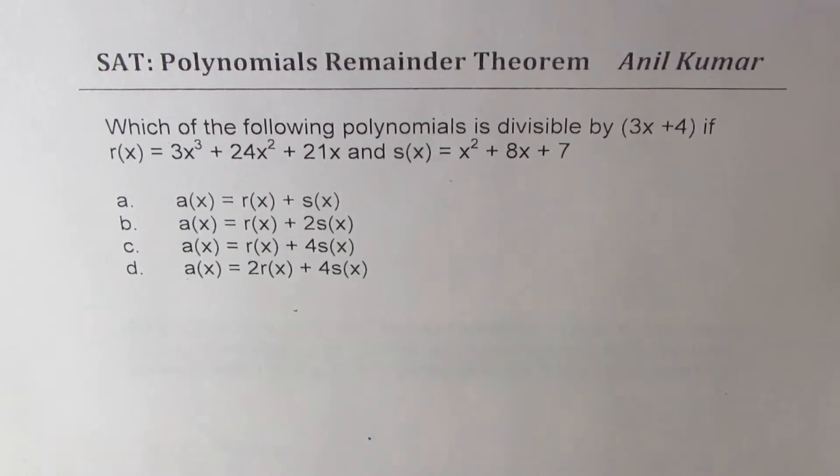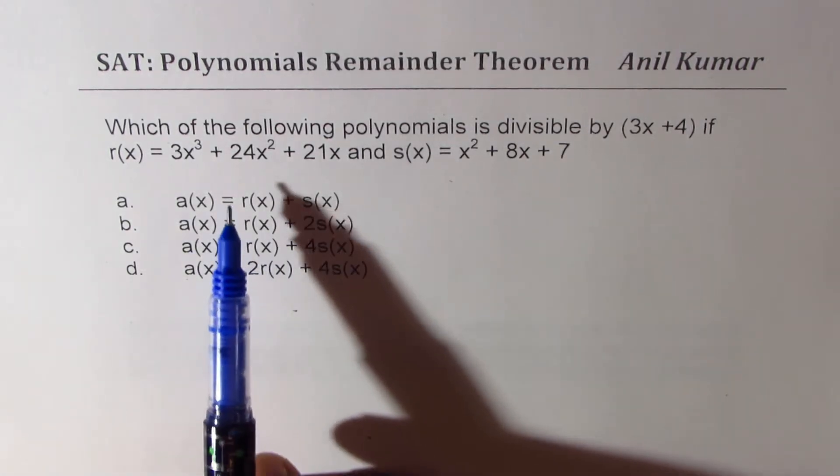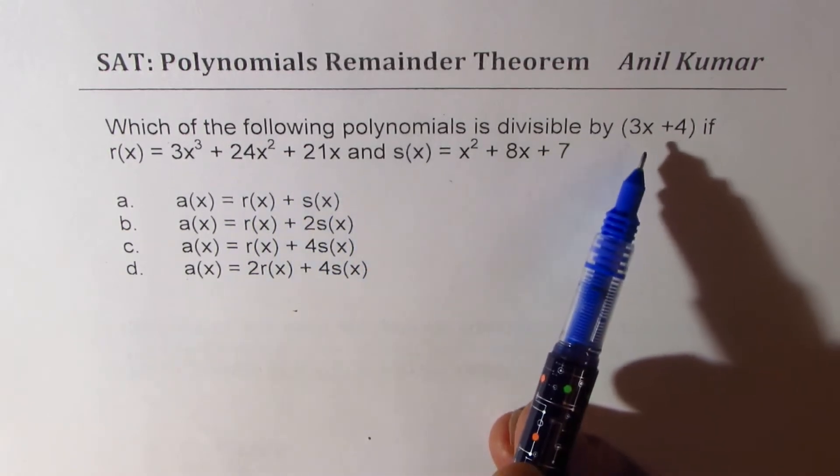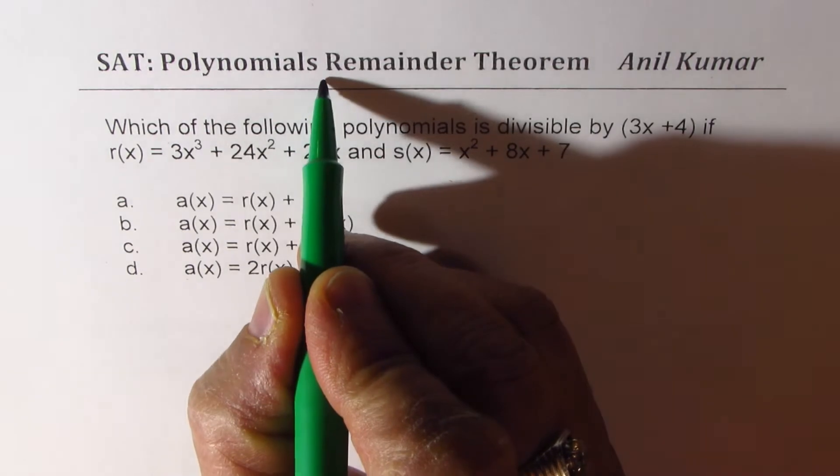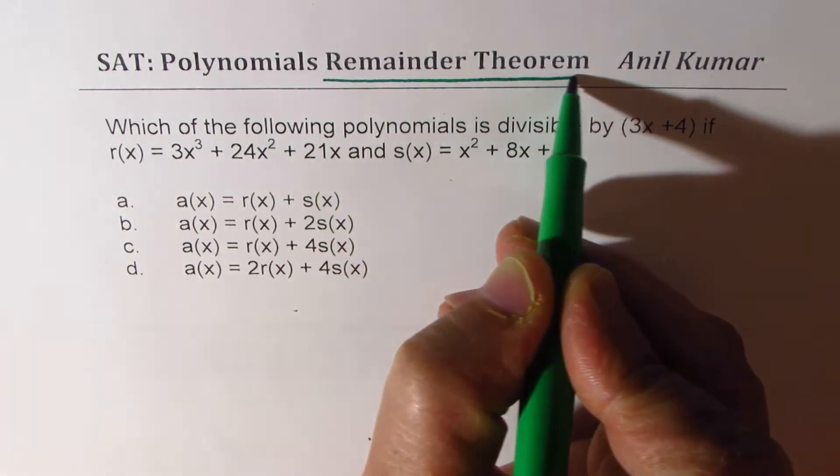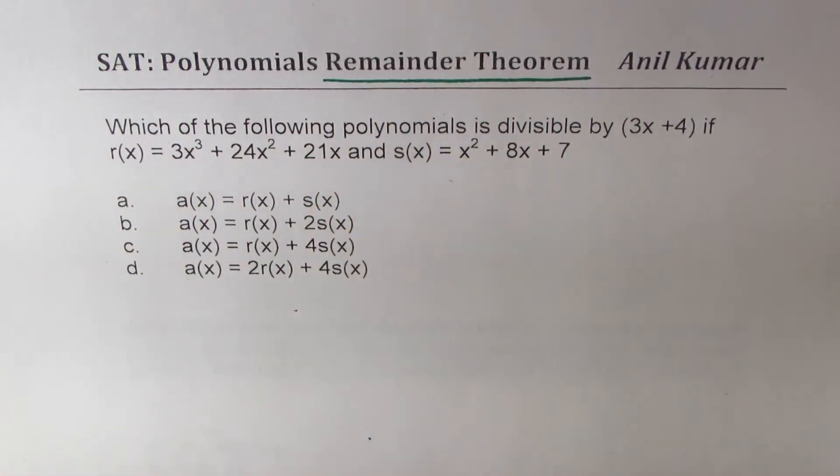Now one way to do it is to write their combinations and do long division and check for the remainder. That's a very lengthy way. The other option is to use remainder theorem. That is the real way to do it. We have to use remainder theorem.